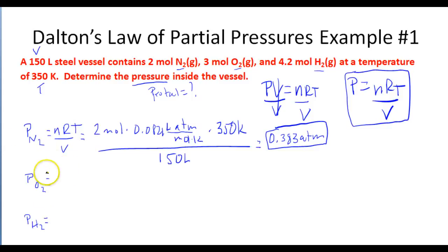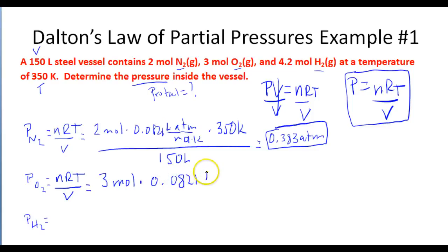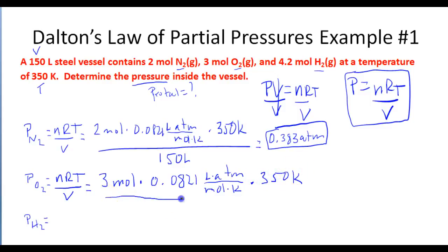Now we do the same for oxygen. The pressure exerted by oxygen is NRT over V: 3 moles times 0.0821 L·atm/(mol·K) times 350 K, divided by 150 liters. Taking 3 times 0.0821 times 350, divided by 150, we end up with 0.575 atmospheres.